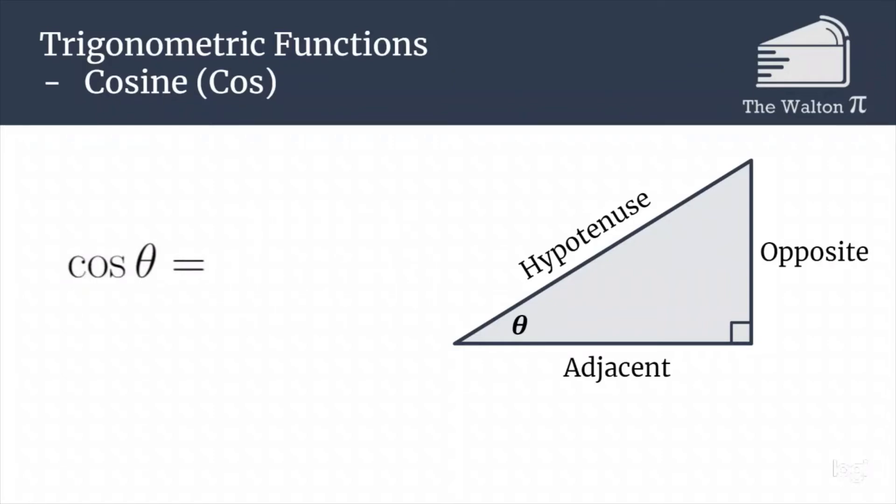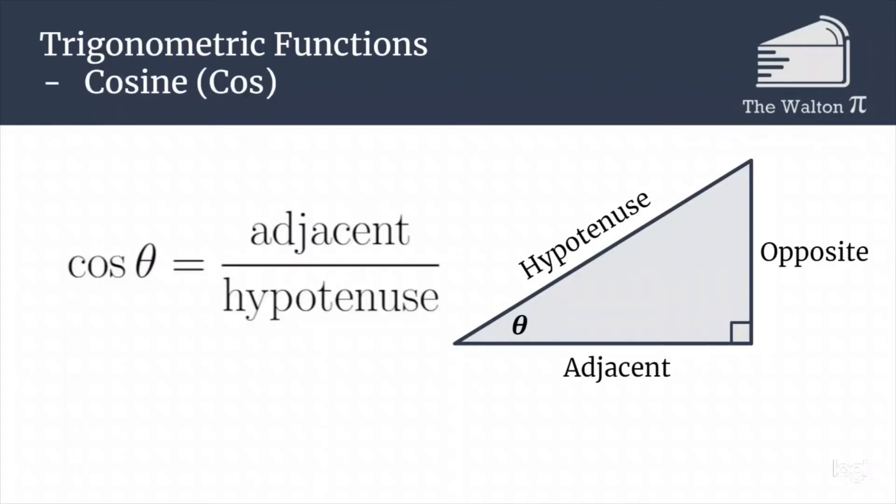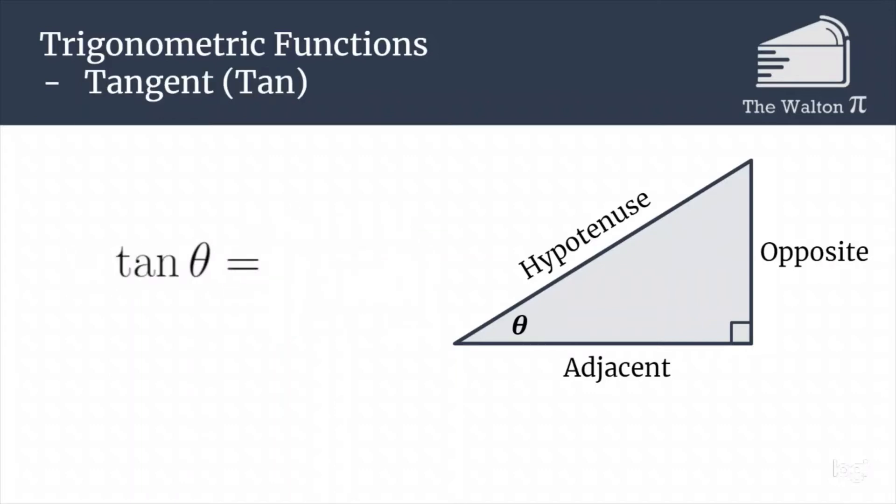Cosine is a different ratio. Cosine is going to be adjacent over hypotenuse. Another one is tangent, and this one is going to be opposite over adjacent.